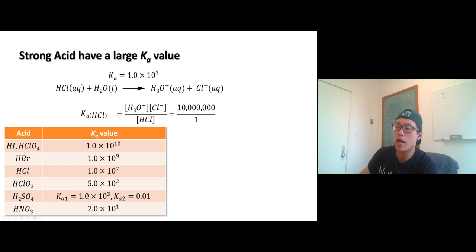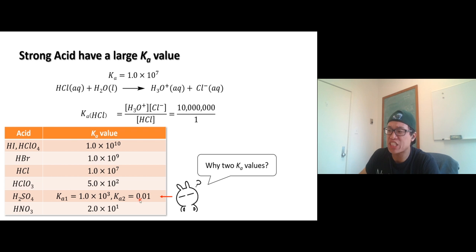A little question for you guys. What do you think? Why, how come sulfuric acid has two Ka values? It got two protons, can dissociate two times. First time is a strong acid, 10 to the third. But the second time is not a strong acid, 0.01. So the second time favors the formation of the reactant. So sulfuric acid is a strong acid only the first dissociation, not the second.